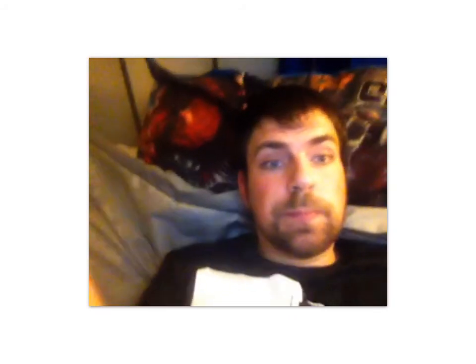It's going to be all about some stuff I did at Google. One thing we liked to do at Google were take these jump shots — it just seemed fun at the time. I've realized these would be good pictures for a flip video. We have each person's name: Maggie jumped that high in inches, Charlie jumped that high, Jess jumped that high, David jumped that high, and I jumped that high.